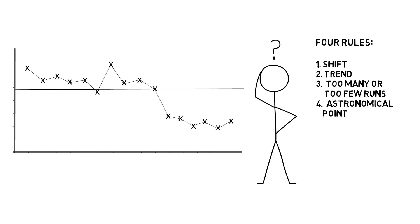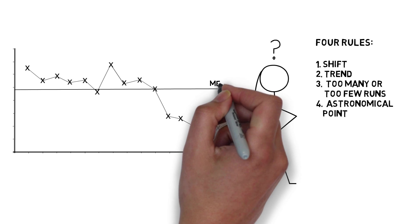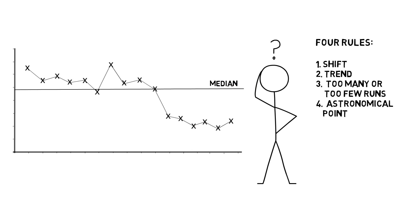To apply Rule 1 and Rule 3, the creation of a median is required. While a baseline median can be created from any number of data points, when the rules are applied to assess whether a signal has occurred, the median should be created using 10 or more data points. When this is not possible, the shift and run rules will not be applicable.